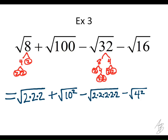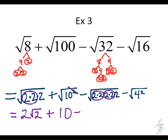Let's go through and simplify each one. The square root of 8, which is now the square root of 2 times 2 times 2 — we have a pair of 2s, so we circle those. On the outside we get 2, and on the inside we have 2. What is the square root of 10 squared? 10. For the square root of 32, we have a pair of 2s and another pair of 2s. On the outside we get 2 times 2, which is 4, so that's 4 square root of 2. And the square root of 4 squared is 4.